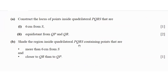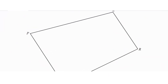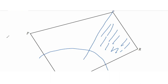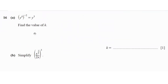Then it says to shade the region inside the quadrilateral PQRS containing points that are more than 6 centimeters from S and closer to QR than to QP. The region is where your arc from S and your angle bisector overlap — closer to QR and greater than 6 centimeters from S.